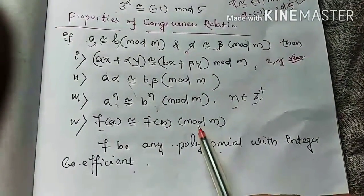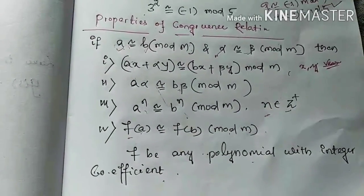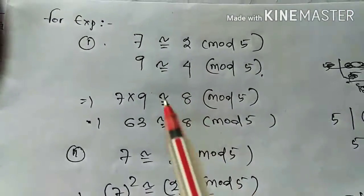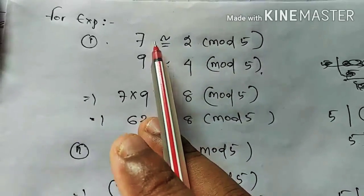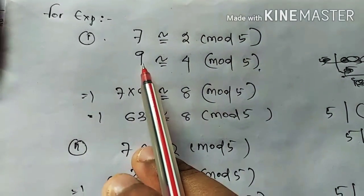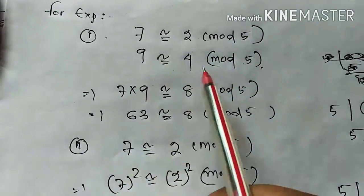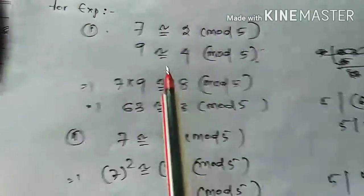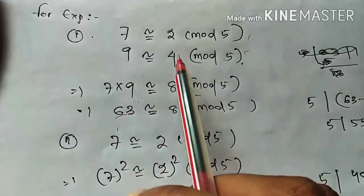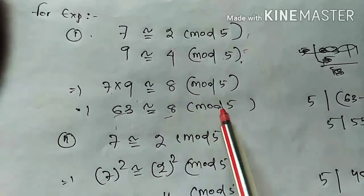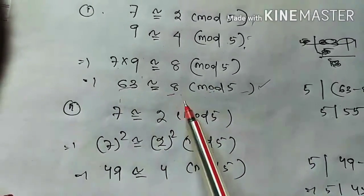Let's understand these properties with an example. Here 7 is congruent to 2 modulo 5 because 7 minus 2 is 5, which is divisible by 5. Also, 9 is congruent to 4 modulo 5 because 9 minus 4 is 5, divisible by 5. The product of the two left-hand sides: 7 times 9 is 63, and the product of the right-hand sides: 2 times 4 is 8. We can write 63 is congruent to 8 modulo 5 because 63 minus 8 is 55, and 55 is divisible by 5.